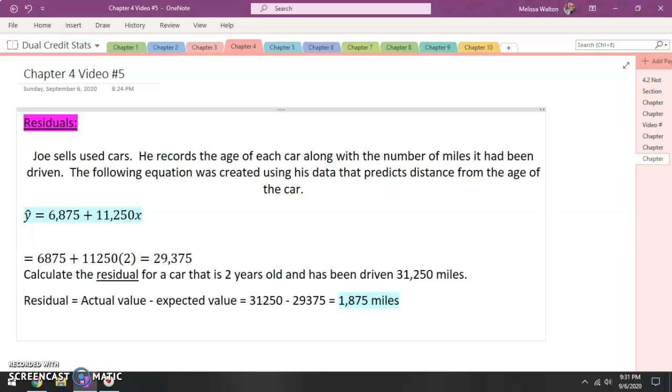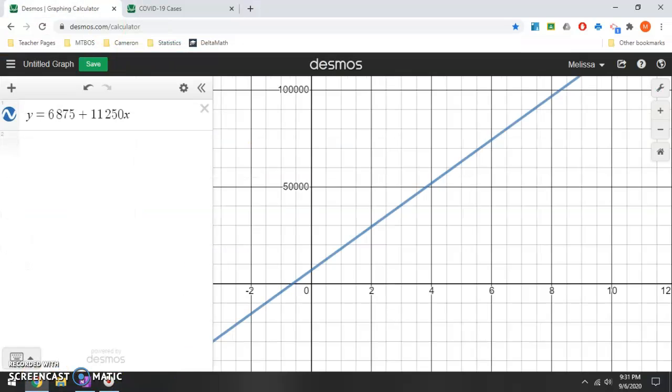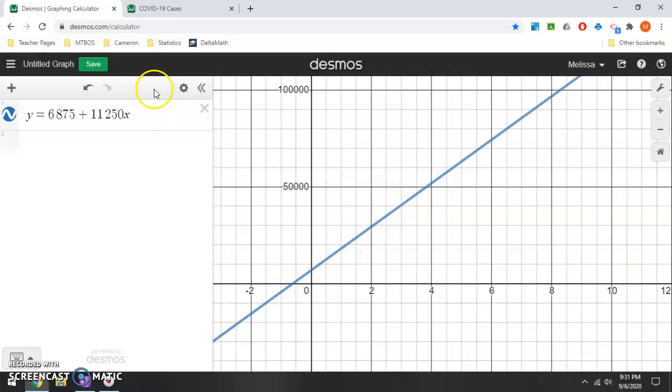This car had more miles than anticipated. And I'm going to go ahead and look at this graphically for you guys. I'm going to go ahead and look at this graphically. So if I were to pull up, I went ahead and graphed that linear regression line. And so the car that we just talked about had two years and 31,250 miles.